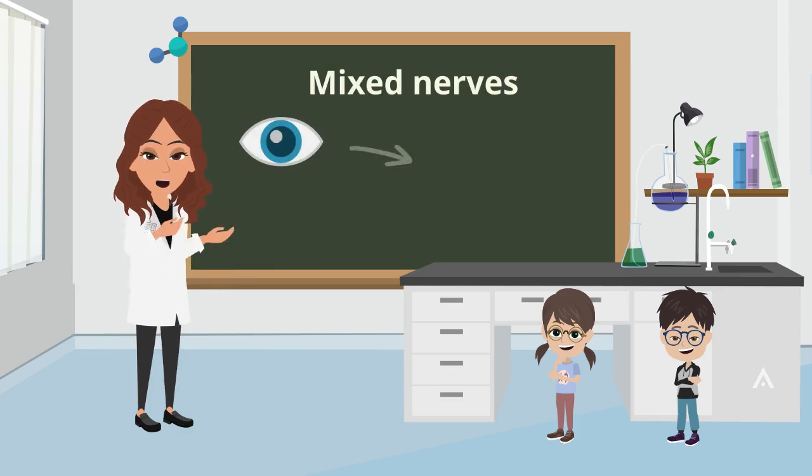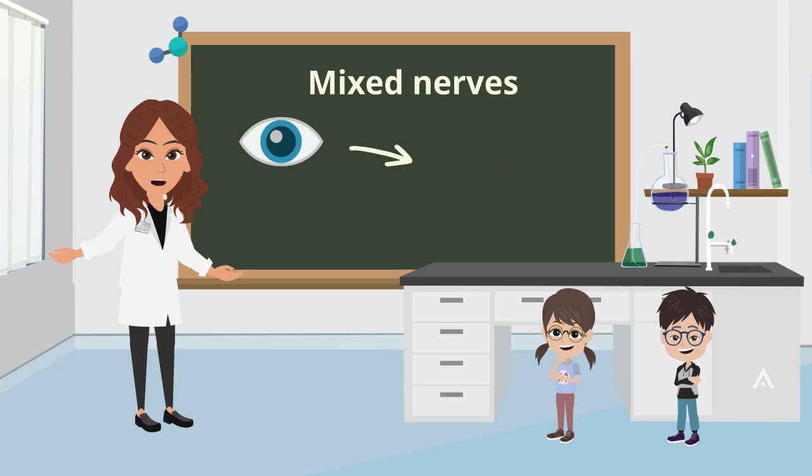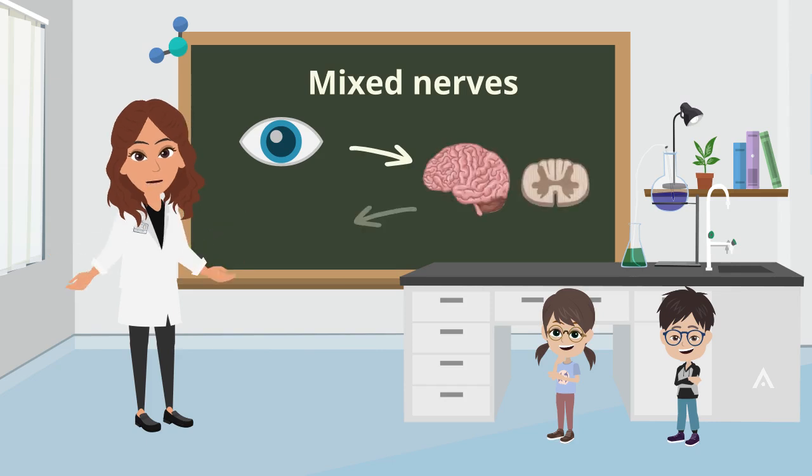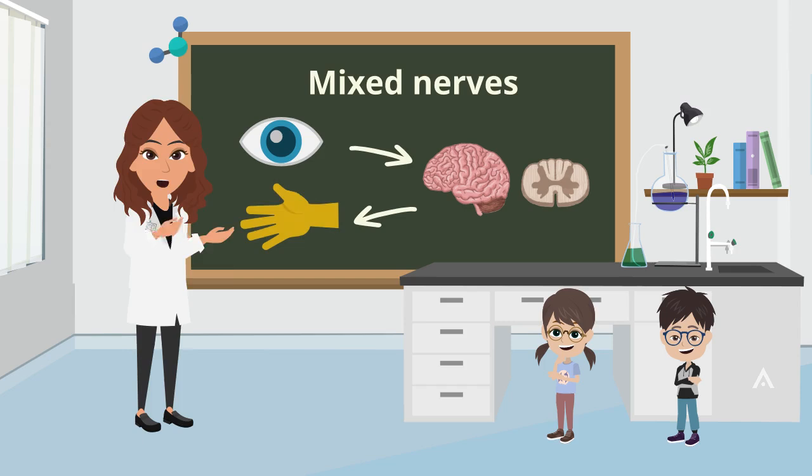Lastly, the mixed nerves carry signals from our sense organs to the brain or spinal cord and from the brain or spinal cord to other parts of the body.